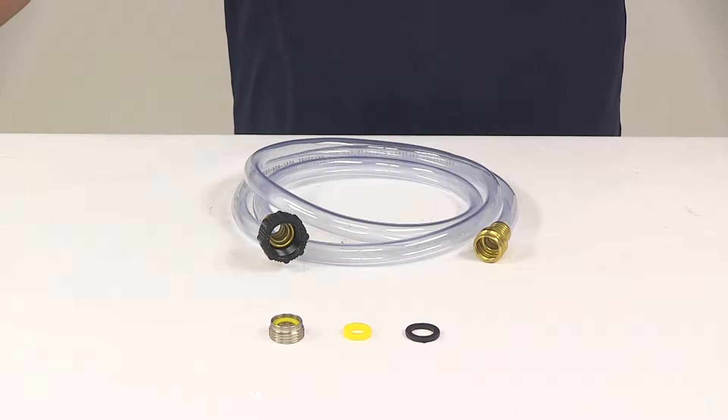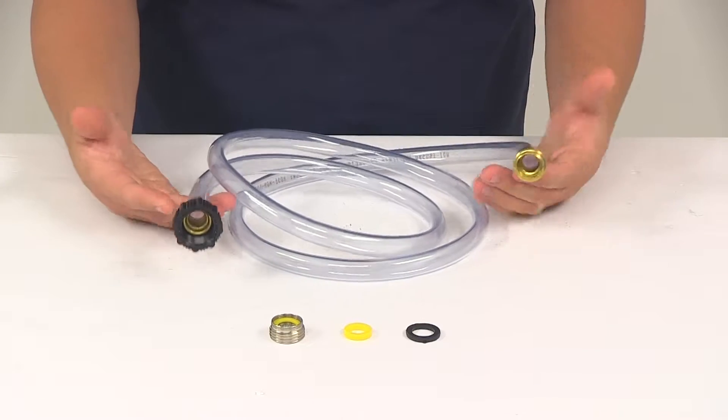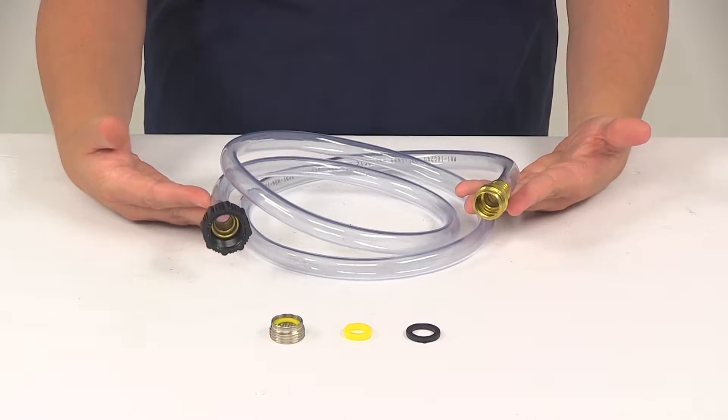Today we're going to be taking a look at the Valterra Tank Wand Hose Kit for RVs. This is a really nice design. It simply allows you to connect your tank wand to a bathroom faucet.